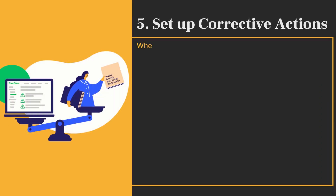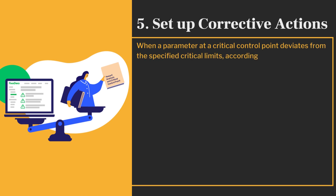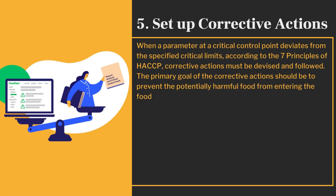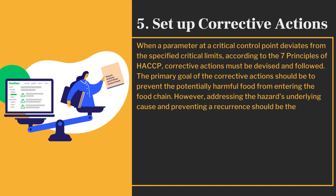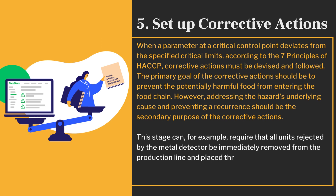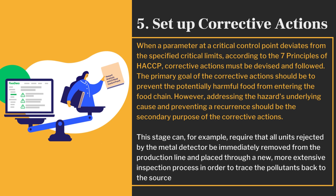When a parameter at a critical control point deviates from the specified critical limits, corrective actions must be devised and followed. The primary goal of the corrective actions should be to prevent the potentially harmful food from entering the food chain. Addressing the hazard's underlying cause and preventing a recurrence should be the secondary purpose. For example, this stage can require that all units rejected by the metal detector be immediately removed from the production line and placed through a new, more extensive inspection process in order to trace the pollutants back to the source of the hazard.